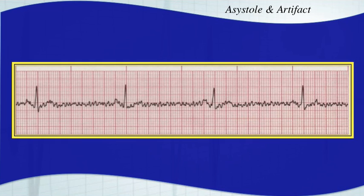Here's another patient with some movement artifact — this is a shivering patient, and you're going to want to try to keep them warm. You can certainly identify the rhythm below this. You can see there's P-waves here and it looks to be a bradycardic rhythm — what looks like a sinus brady. But how do you know that there's not some P-waves over here, and this is maybe a 2-to-1 AV block or something like that? So you're going to want to eliminate that artifact if possible.